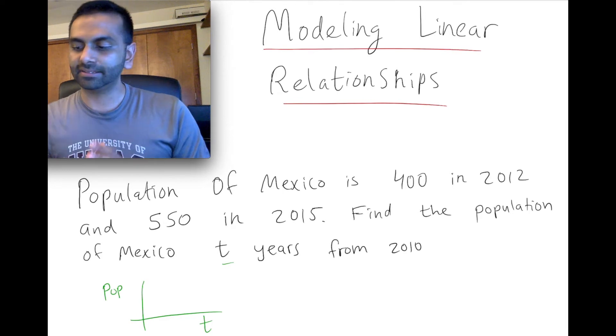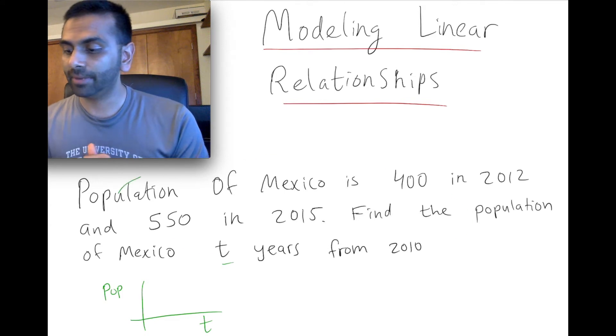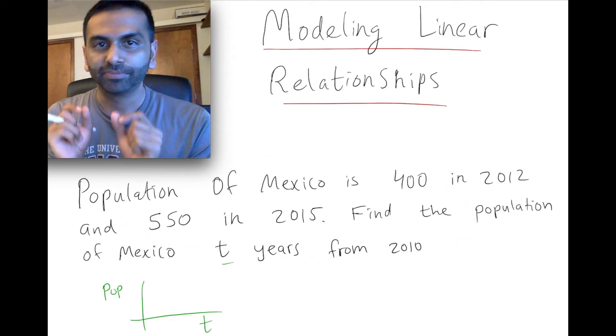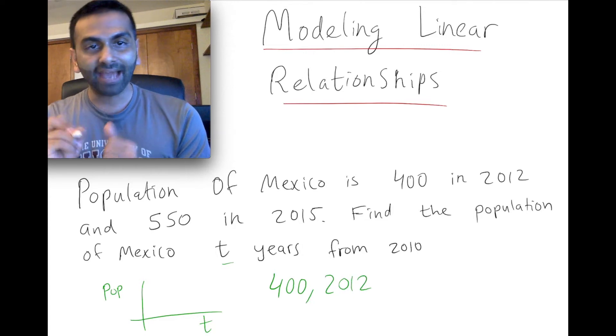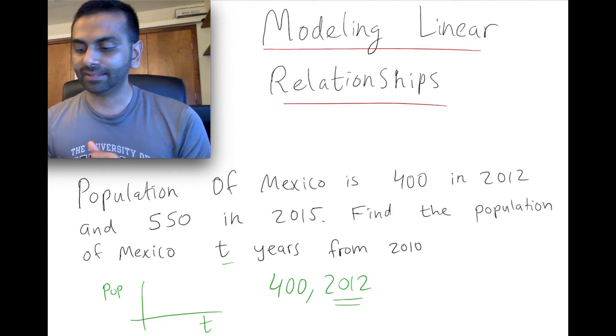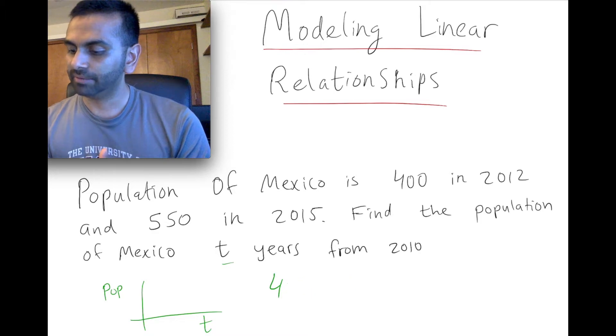Now, it's really tempting looking at this to say, alright, the points that we're given, because one thing we do want to do is turn this paragraph into essentially two points. So to turn these into two points, it might look like one point is, alright, the population is 400 in the year 2012. First of all, it might be accidentally tempting to be like, oh, yeah, 400 comma 2012. But first of all, keep in mind, the X value is the year, not the population, right? The population is the Y. So this would be the Y. This is the X.